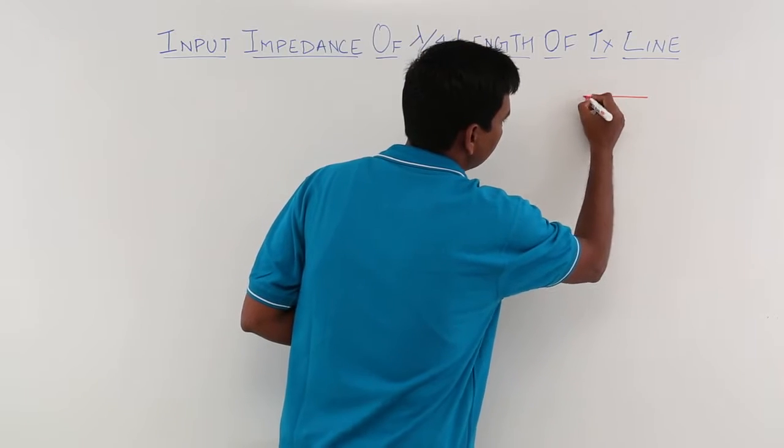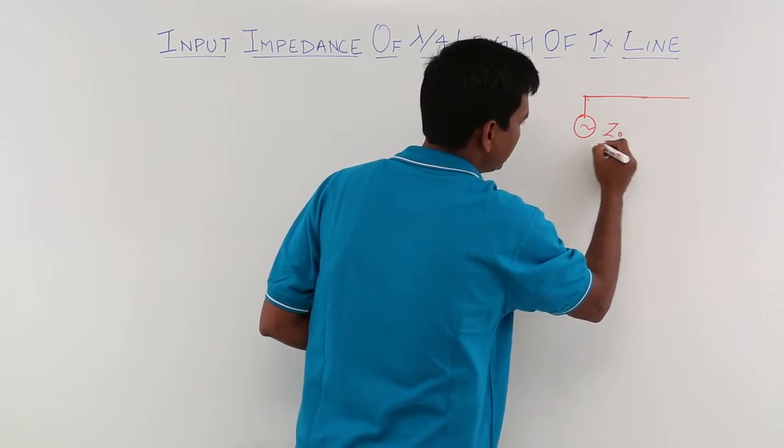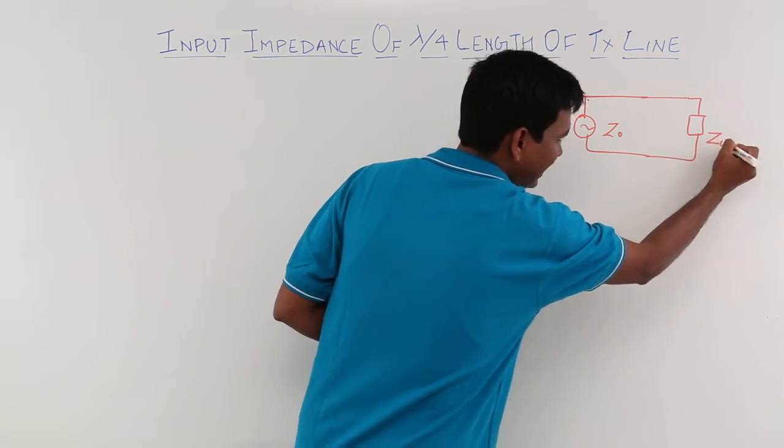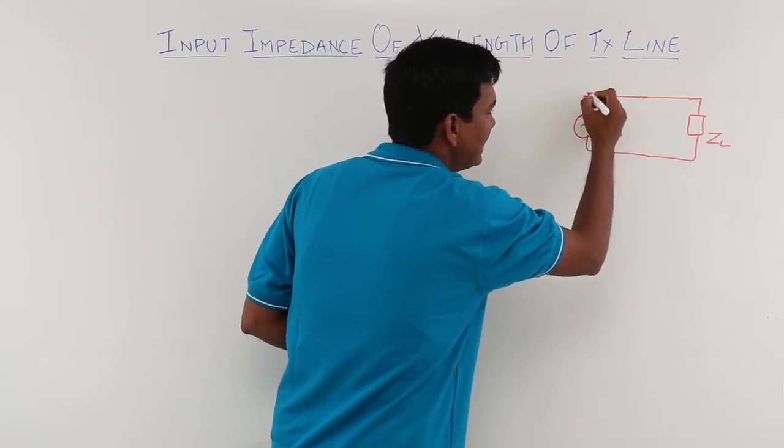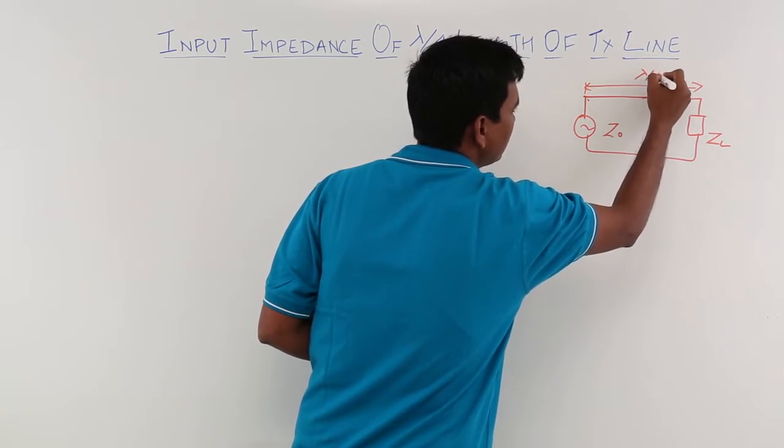There is a transmission line which has a characteristic impedance z0 and load impedance zl. The length of the transmission line is lambda by 4.